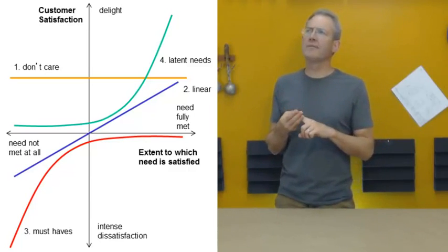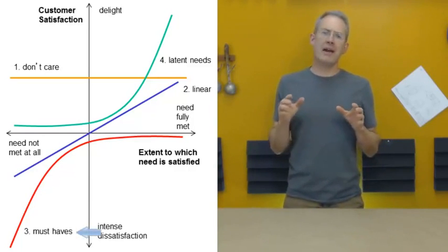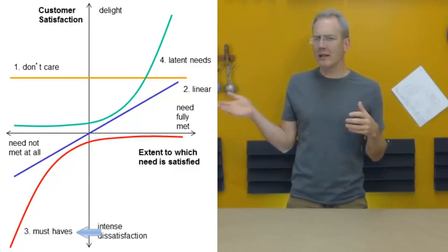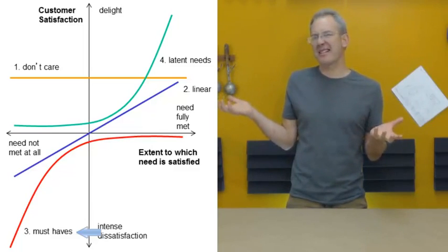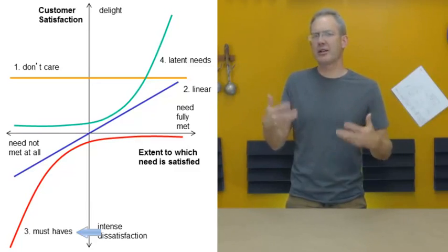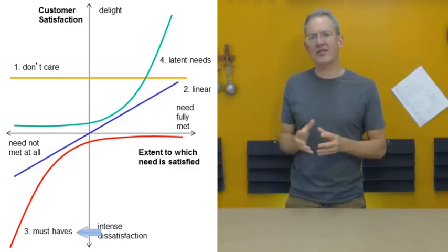The third category are the must-haves. And these are the needs which, if not addressed in the product, invoke intense dissatisfaction. Whereas, if you do them extremely well in the product, your user basically doesn't notice. That is, you don't get any real credit for delighting the user when you really satisfy the need.